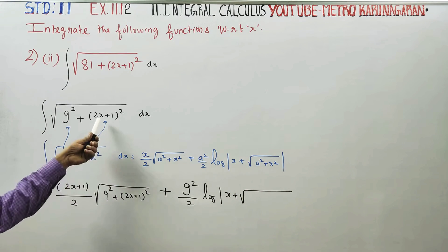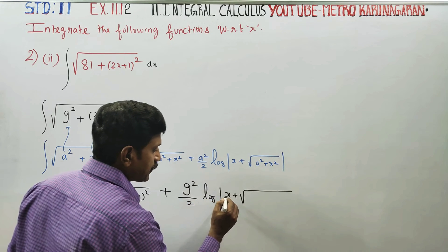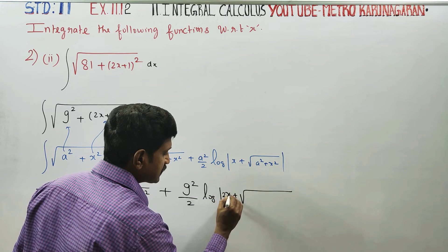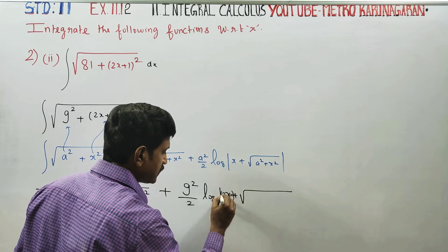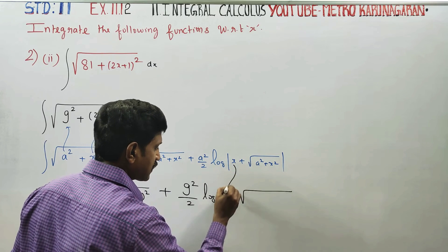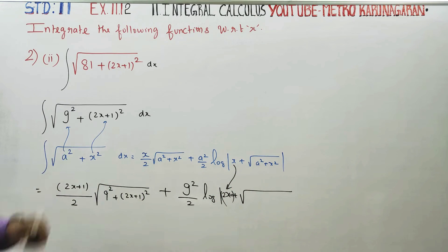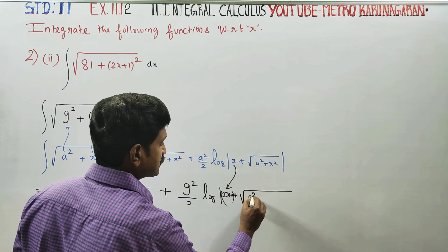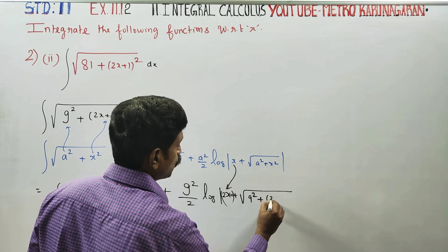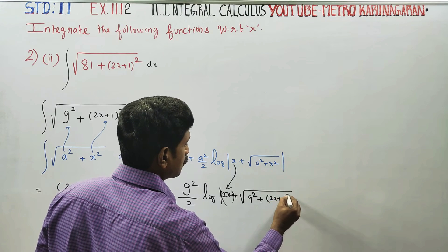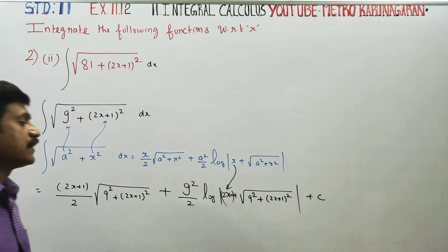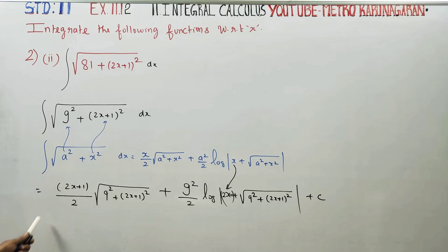Now substituting x with (2x+1): we get (2x+1) in the formula. a square by 2 becomes (2x+1) whole square plus c. This is the formula applied.